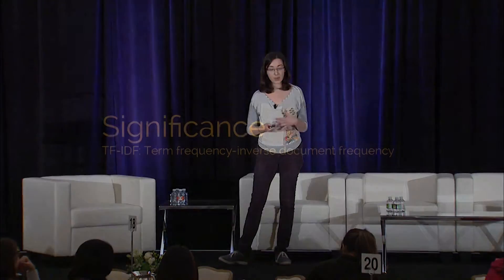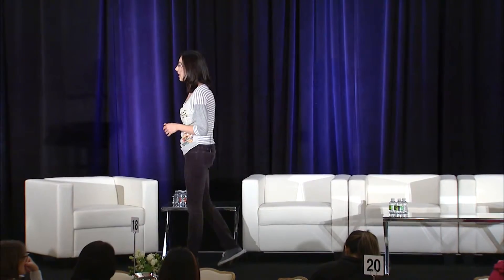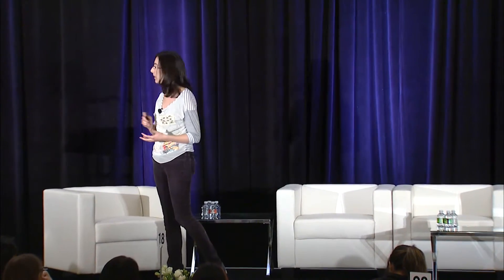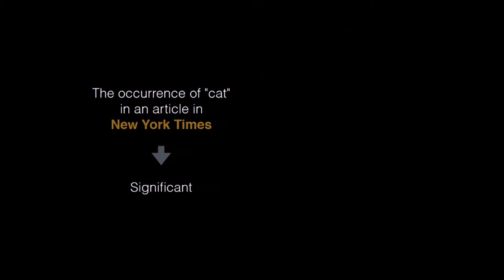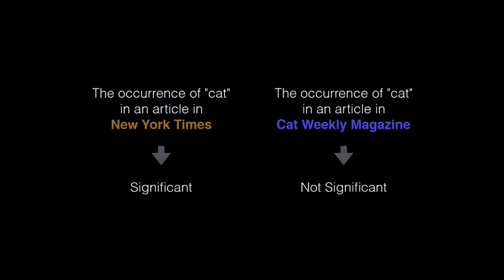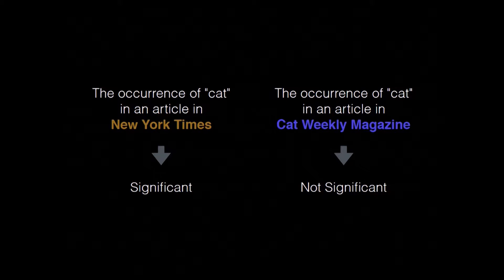The first thing I want to talk about is significance of words. If you see the word 'cat' inside a New York Times article, that's probably significant—it probably means that article is about cats. But if you see the word 'cat' in an article in Cat Weekly Magazine, it's probably not that significant, because every article in Cat Weekly Magazine is about cats. That means you want to look for words that are going to be much more important.